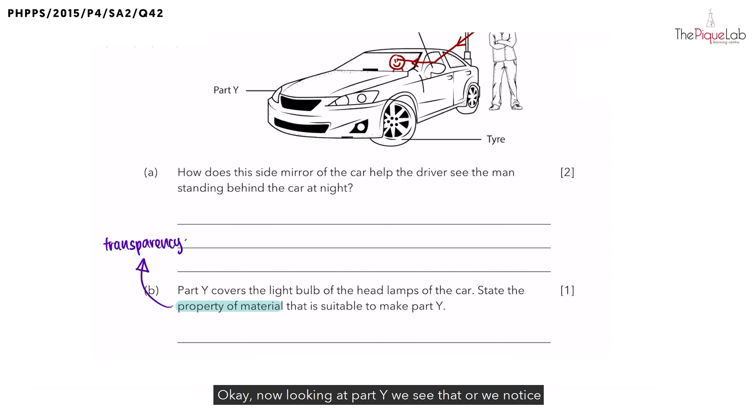Okay, now looking at part Y, we notice that it is covering the light bulb of the car which gives off light. Now what material, transparent, translucent, or opaque, should we use to cover the light bulb so that the driver is still able to drive safely on the road? Now to drive safely, the driver would need to have light in order to see the objects in the surrounding the most clearly.